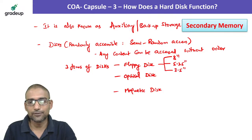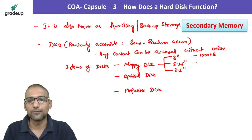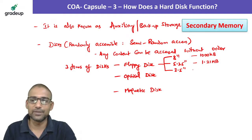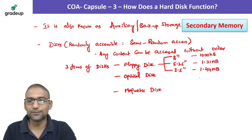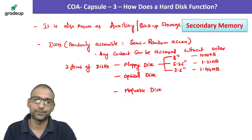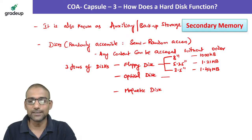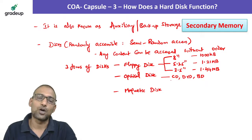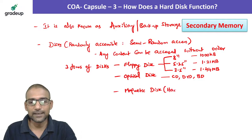For floppy disks: an 8-inch floppy can store 1000 KB, a 5.25-inch floppy can store 1.21 MB, and a 3.5-inch floppy can store 1.44 MB. Optical disks include CD, DVD, and Blu-ray disks. The magnetic disk is what we call a hard disk — the technical name for a hard disk is magnetic disk.